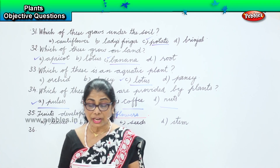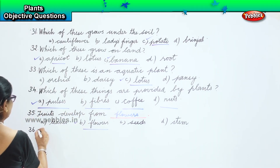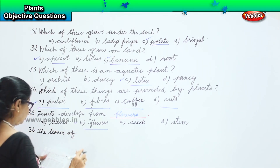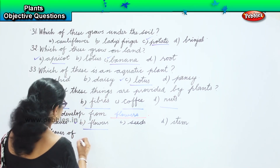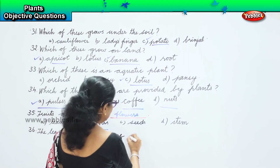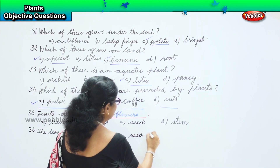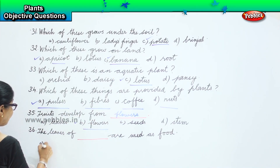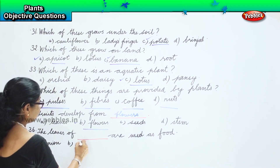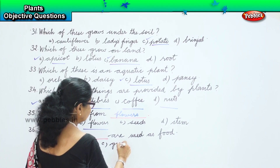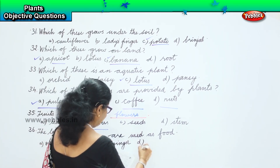The thirty-sixth question: the leaves of blank are used as food. Let's look at our options. Option A: onion. Option B: eggs. Option C: ginger. And option D: cabbage.